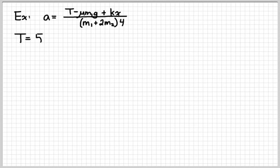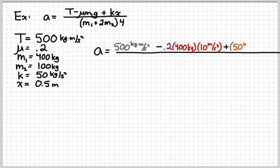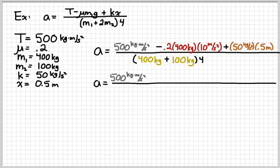Let's look at another example. This one's a little bit longer. I've got a equals T minus mu, that's the letter mu, m1g plus kx all over m1 plus 2m2 in parentheses times 4. Let's start out just by writing out the substitution, including the units. I don't have any exponents here, so let's take care of the multiply part.